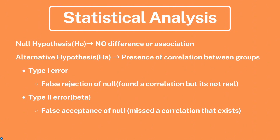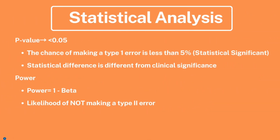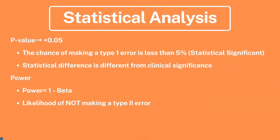With Type 1 error, because of bias or the study design, you concluded there was a correlation, but in reality it's not real. With Type 2 error, you said there is no correlation between the two groups, but in actuality there is a correlation.